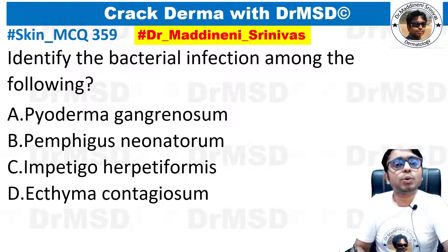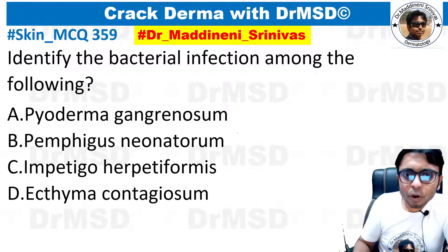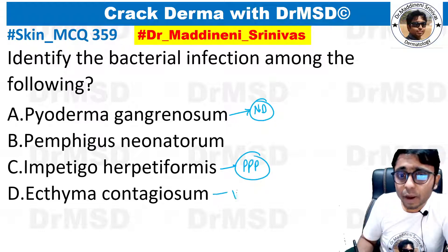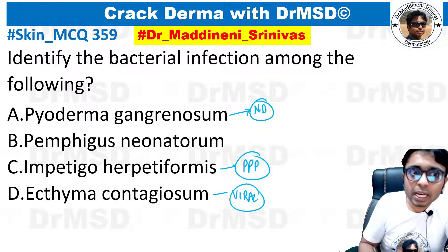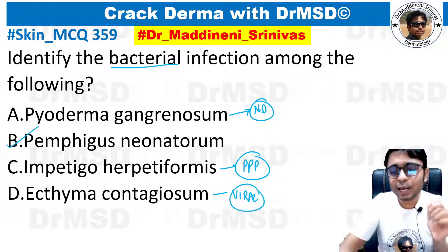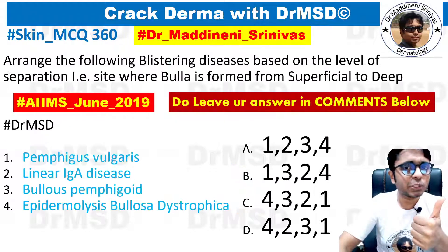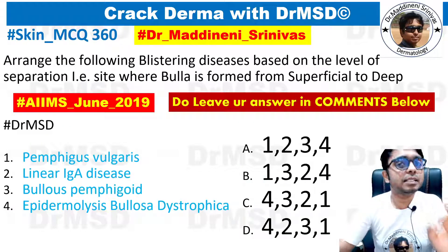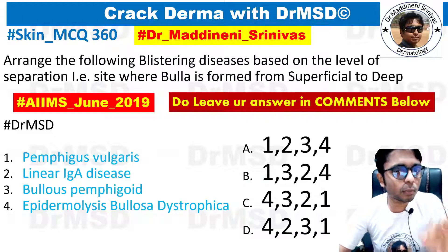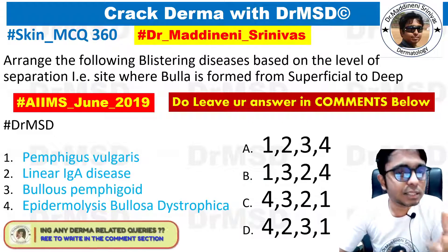So, to summarize: neutrophilic dermatosis, pustular psoriasis of pregnancy — these are viral infections. And pemphigus neonatorum is a bacterial infection. I hope that is clear. Please give this video a thumbs up and subscribe if you want more content like this.